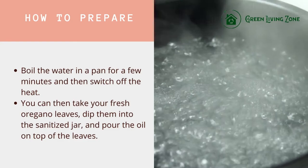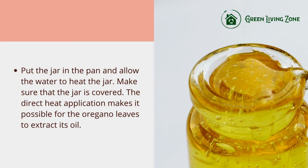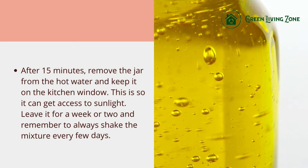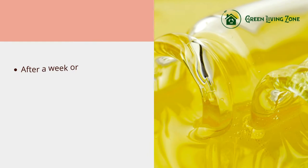Take your fresh oregano leaves, dip them into the sanitized jar, and pour the oil on top of the leaves. Put the jar in the pan and allow the water to heat the jar, making sure the jar is covered. This direct heat application extracts the oil from the oregano leaves. After 15 minutes, remove the jar from the hot water and keep it on the kitchen window to access sunlight. Leave it for a week or two, remembering to shake the mixture every few days.